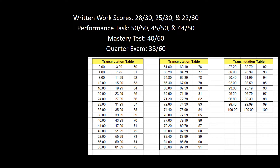Let's start with the following grades. For written work scores you have 28 over 30, 25 over 30, and 22 over 30 under the 25 percent component. For performance task you have 50 over 50, 45 over 50, and 44 over 50 under the 50 percent component. For the mastery test and quarterly test you have 40 over 60 and 38 over 60 under the 25 percent component.